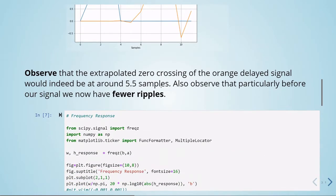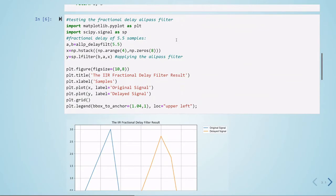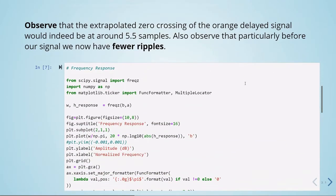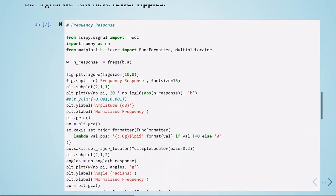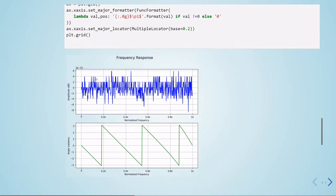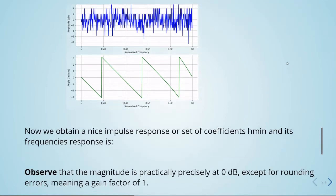We can see the frequency response of this filter here. We will again use scipy signal freqz, and we are plotting the frequency response. Here you can see the scale. This is basically zero with some rounding errors.